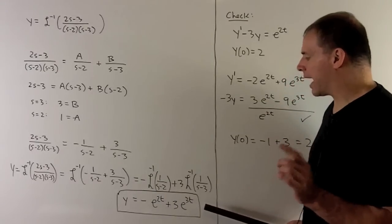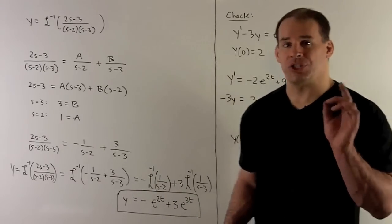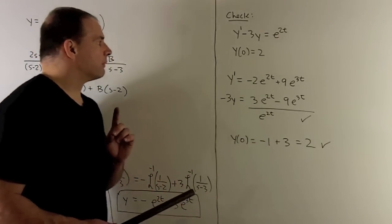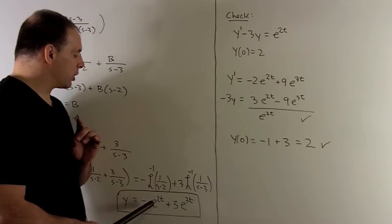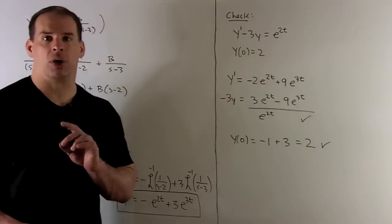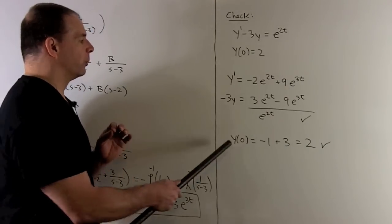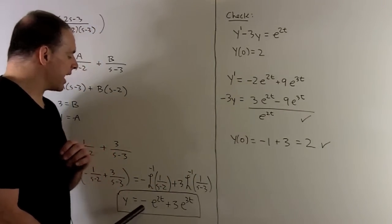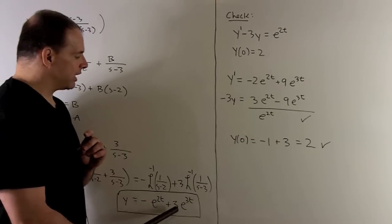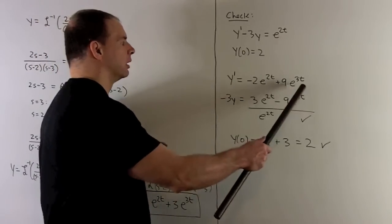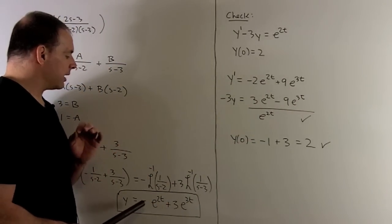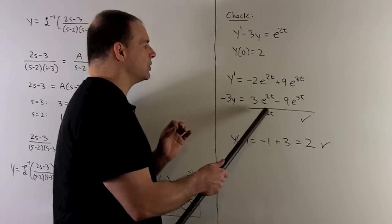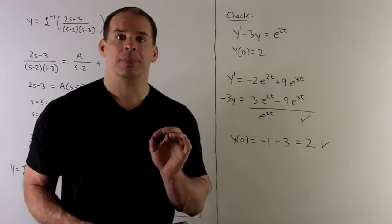Of course, we check our answer by running it through the initial value problem. First, y of 0: substituting 0 into e to the 2t and e to the 3t gives e to the 0, which is 1, and the result is 2 — that checks out. Then we take the derivative: 2 comes down giving minus 2 e to the 2t, and 3 comes down giving 9 e to the 3t. Multiplying y by minus 3 gives 3 e to the 2t minus 9 e to the 3t. Adding gives e to the 2t as expected, so our work checks out.